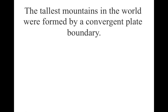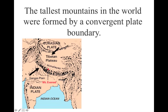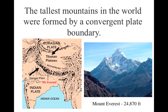The tallest mountains in the world were actually formed by a convergent plate boundary between two continental crusts. We have the Indian plate — continental crust — crashing into the Eurasian plate — continental crust — and what we get is the Himalaya Mountains and the Tibetan Plateau. So we have a high plateau and really huge folded mountains, the highest of which is Mount Everest at 24,870 feet. The highest mountain in California is Mount Whitney at about 14,000 feet, so Mount Everest is almost twice as high. You actually have to have an oxygen mask to climb it, and many people have died trying.